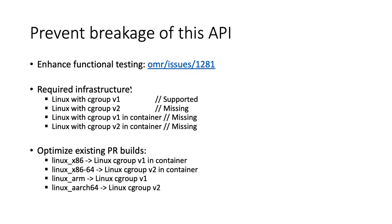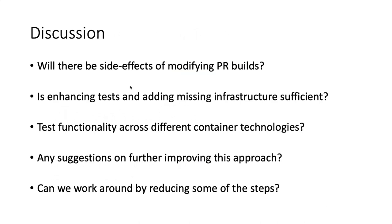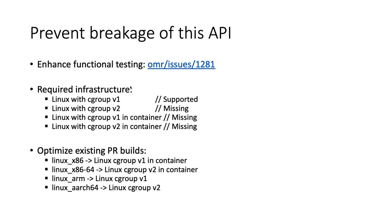Yes, that's what enhancing functional testing would cover. In order to modify the PR builds, those tests need to be running in a container, or on a Linux bare metal operating system with cgroup V1, and then another with cgroup V2 enabled. You would also need to run cgroup V1 and V2 in a container — so four configurations in total.